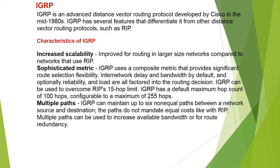Router# debug ip rip. IGRP is an advanced distance vector routing protocol developed by Cisco in the mid-1980s. IGRP has several features that differentiate it from other distance vector routing protocols such as RIP. Key characteristics of IGRP include increased scalability and improved routing in large networks compared to RIP.